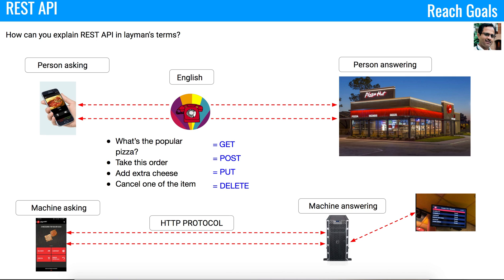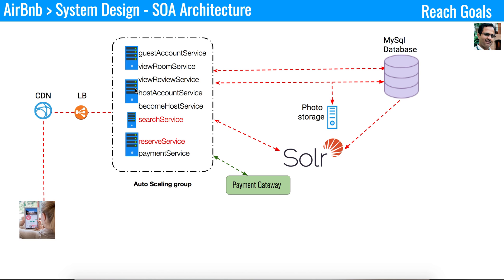That's how you explain the REST API in layman's terms. If you have a better way of explaining it, please put that in the comments — it will be helpful for others. Now let's see how the RESTful API fits into the entire system design or architecture. If you look at this diagram, this is something I used in the Airbnb system design in one of my earlier presentations.